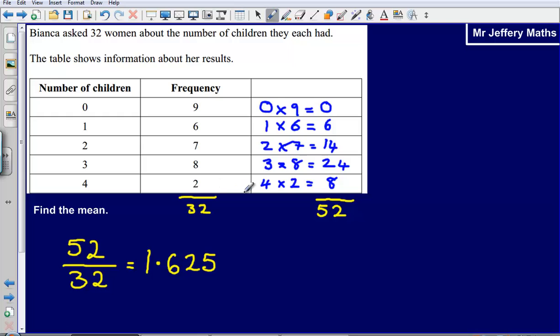3 times 8, 4 times 2, and so on. Then we have added these together and divided by the total frequency. So 52 divided by 32, and that's giving us an answer of 1.625.